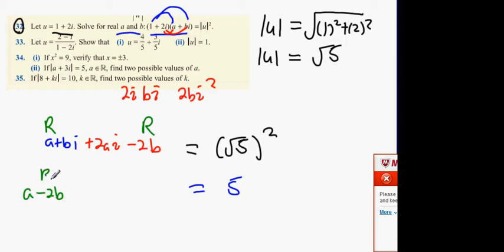And then we're going to get the next part, which is 2ai plus bi, and that's imaginary. Now what's the imaginary number on the right hand side? Is there any i's on the right hand side?